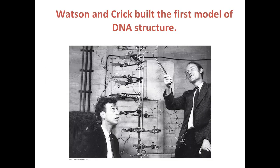Next comes the famous Watson and Crick. Watson and Crick were awarded the Nobel Prize for building the first model of the actual structure of DNA. However, it's important to note that they actually used Franklin's data to build this model. Franklin's data was given to Watson and Crick by her colleague Maurice Wilkins without her permission. Watson, Crick, and Wilkins were all awarded the Nobel Prize for their work towards modeling the structure of DNA, whereas Franklin's contribution was not acknowledged.